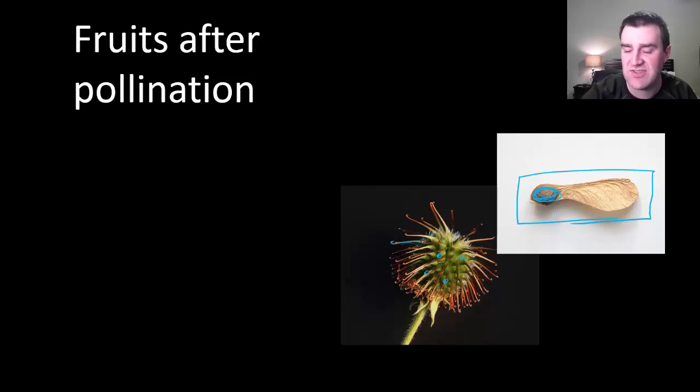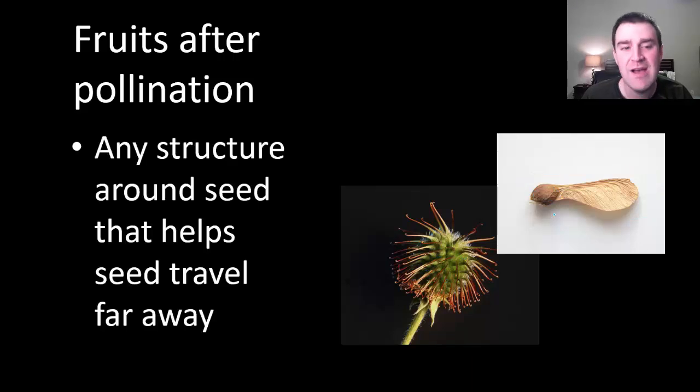So again, you're starting to see that the biological definition of fruit is a little bit different from our common usage of the word. A fruit in biology is just any structure that develops around the seed to help get the offspring far away from the parent and to help spread that species somewhere else on land.